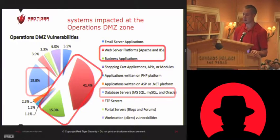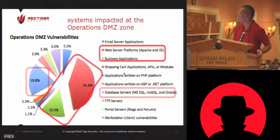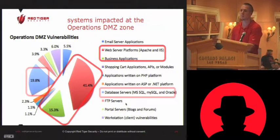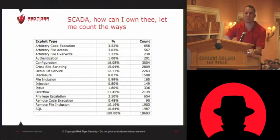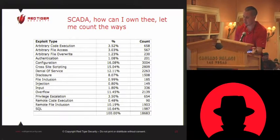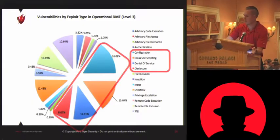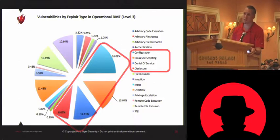If you covered up the top part of the slide and just saw a lot of problems with web servers, business applications, and database servers, you'd say that just looks like the problems on the corporate side — because it's the same types of components used on the SCADA side as well. So, SCADA — how can I own thee? Let me count the ways. These types of exploits — configuration problems, patching problems, cross-site scripting, SQL injection — are already known attack vectors, and they comprise the largest types of exploits that work in operational DMZ networks.